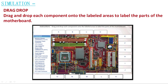As you can see on the picture, these are the label areas: A, B, C, D, E, F, G, H, I, J, K, L, M, N, and O. In the actual exam, you have to select the correct component for each label area and drag and drop it onto each label area. So let's check the default components for the simulation.